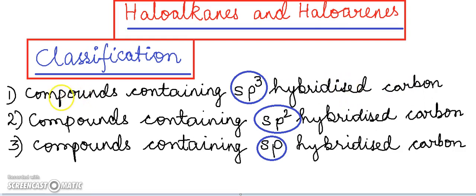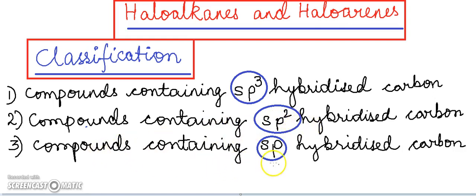The classifications are: compounds containing the sp3 hybridized carbon atom, compounds containing the sp2 hybridized carbon atom, and compounds containing the sp hybridized carbon atom.